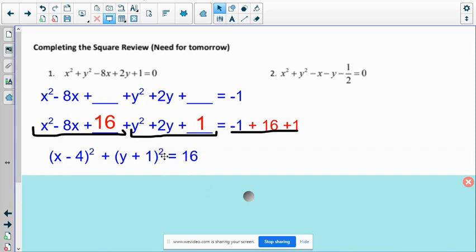So what happens is it factors into this x minus 4 squared and y plus 1 squared. And then on this side, the 1's canceled, so you get just 16. And from that, I hope you know that you have a circle.